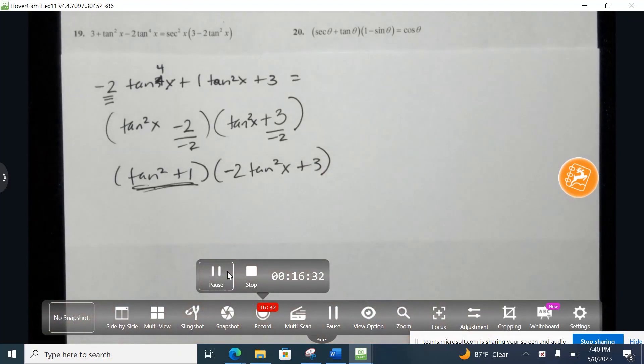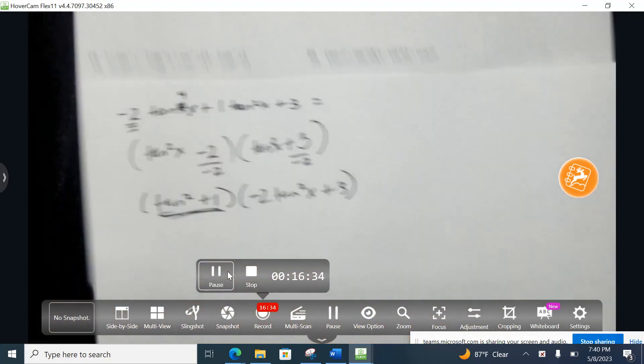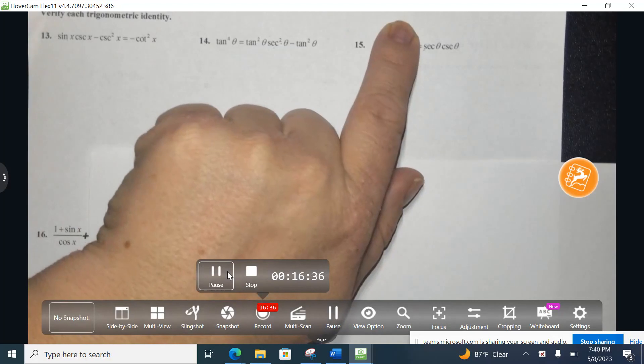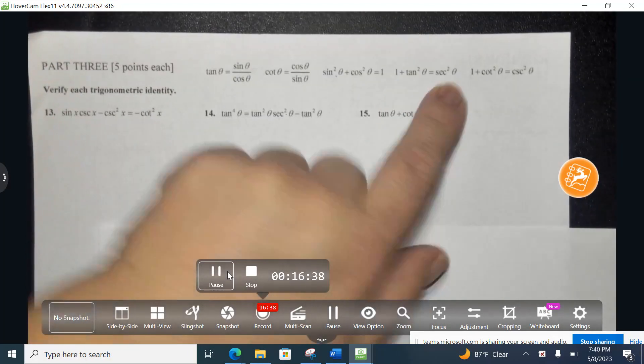Now, tangent squared plus 1, when I look at the trig, tangent squared plus 1 right here is the same as secant squared.